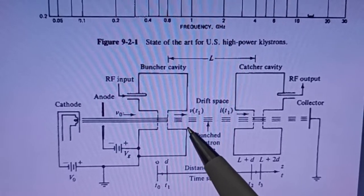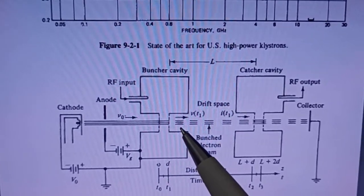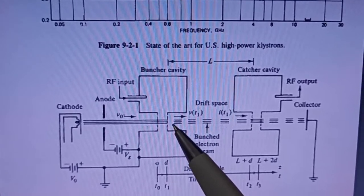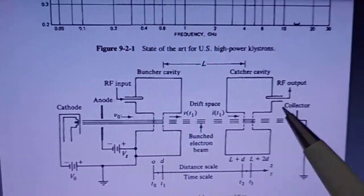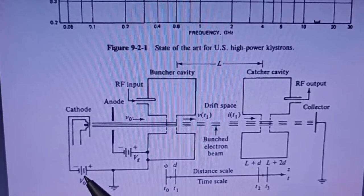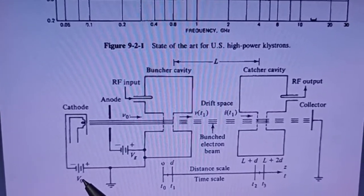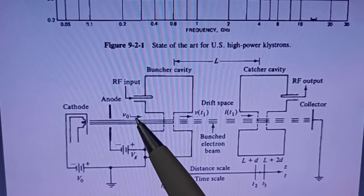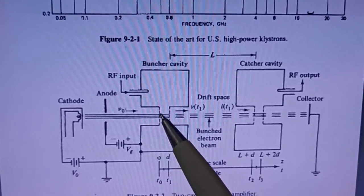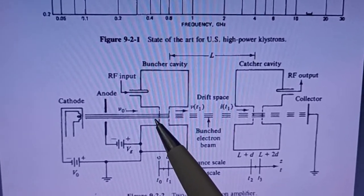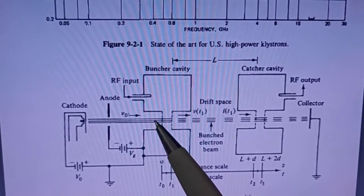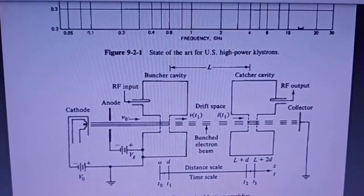Now you have to calculate the velocity modulation of these bunched electrons. First, remember capital V0 is the voltage and small v0 is the velocity — the velocity of the electrons before the buncher cavity. We will derive the velocity modulation equation.